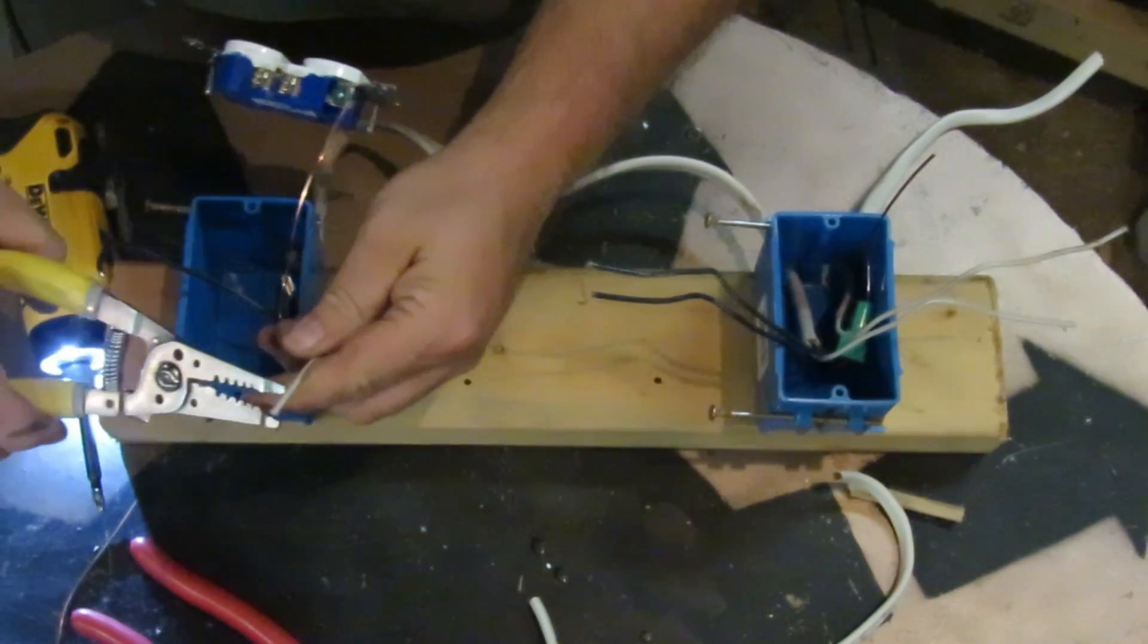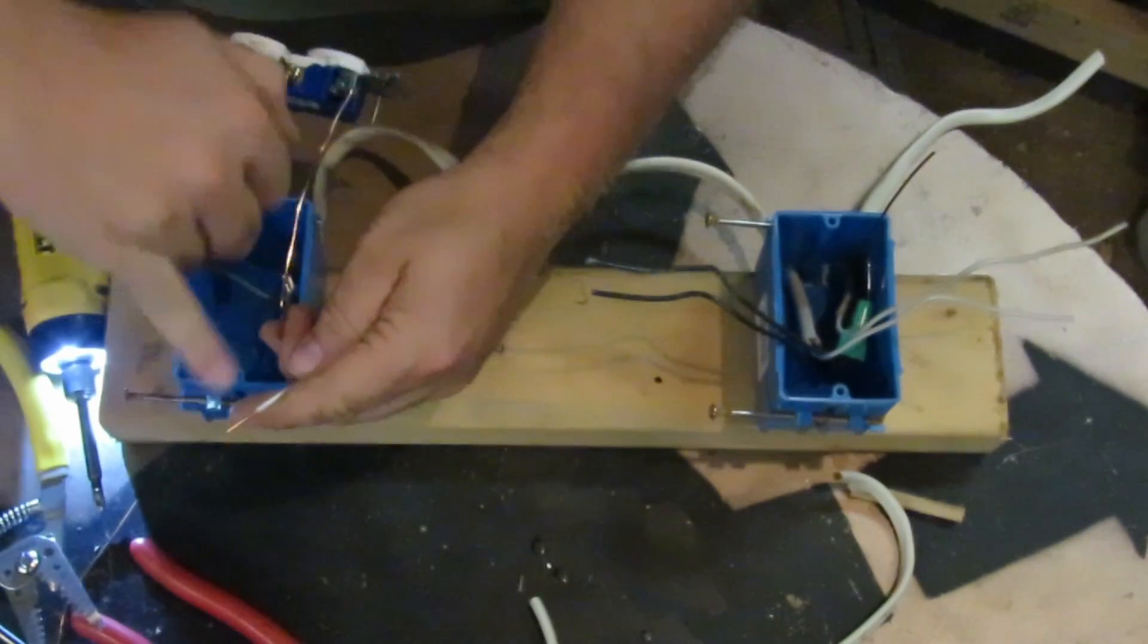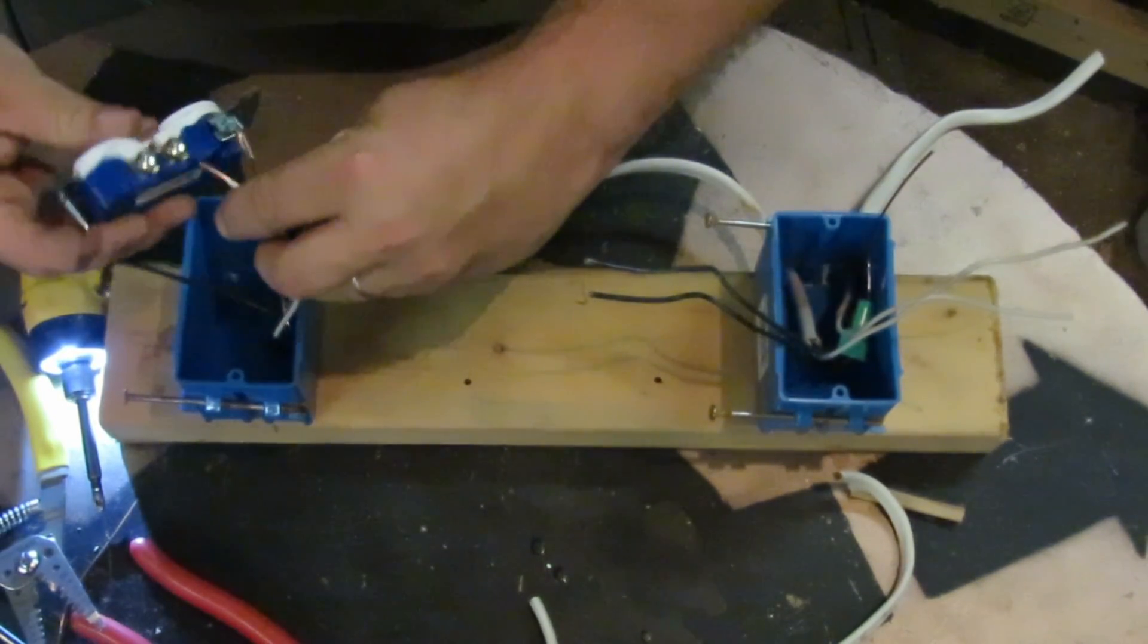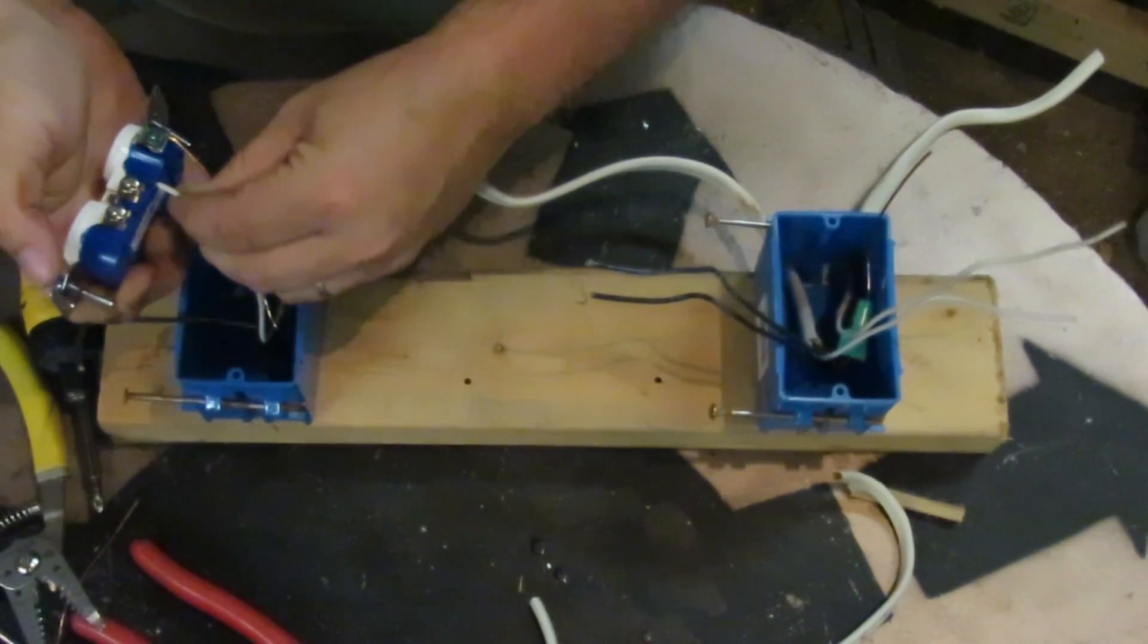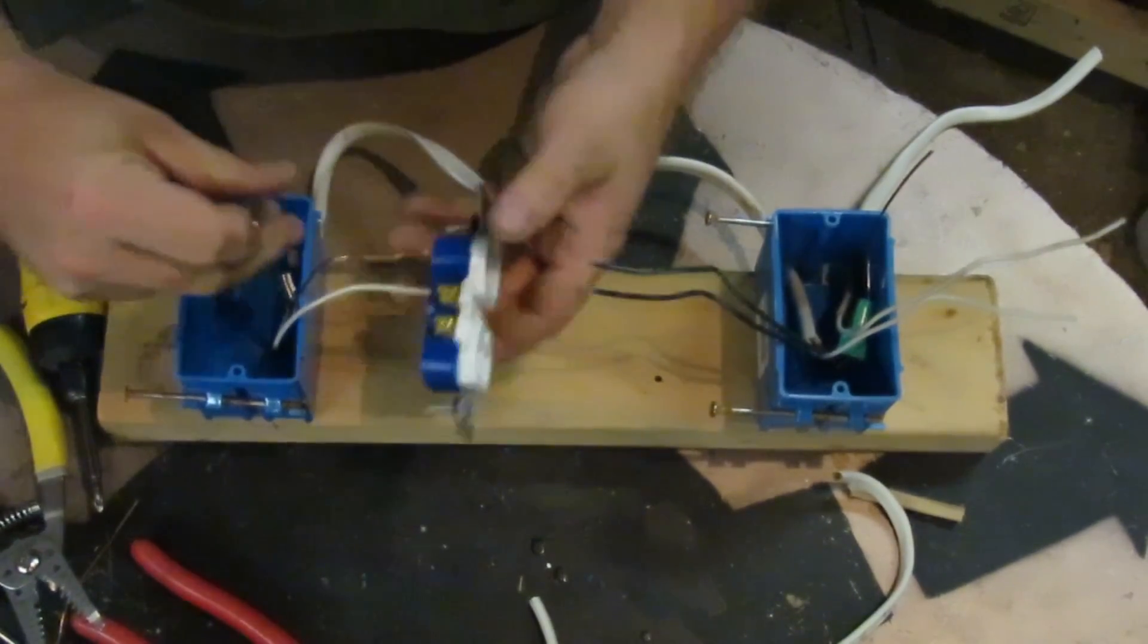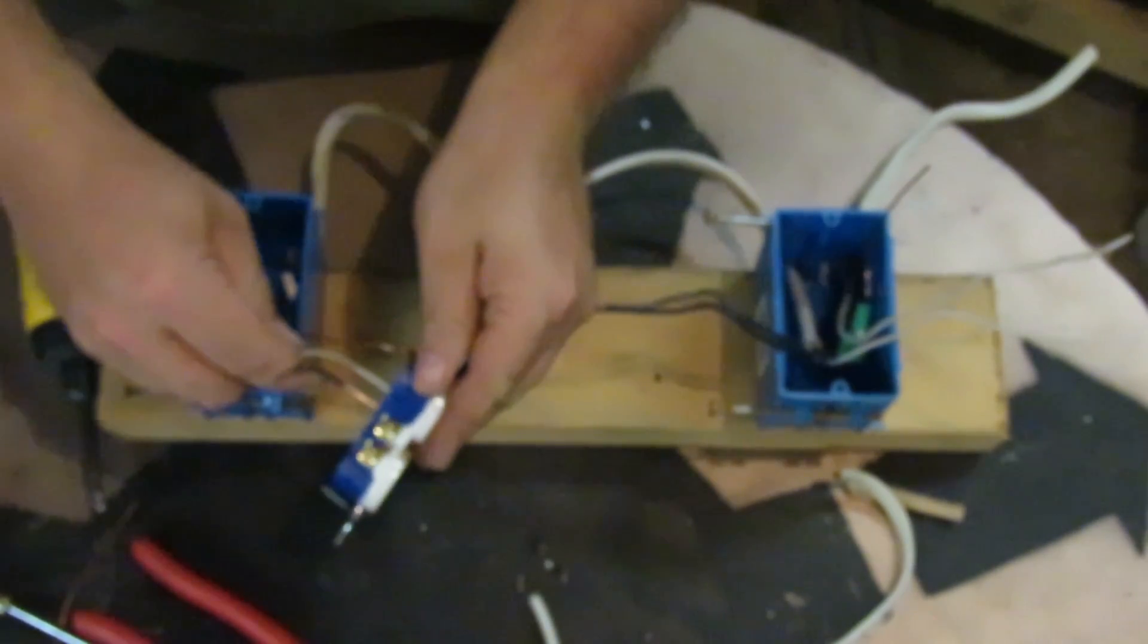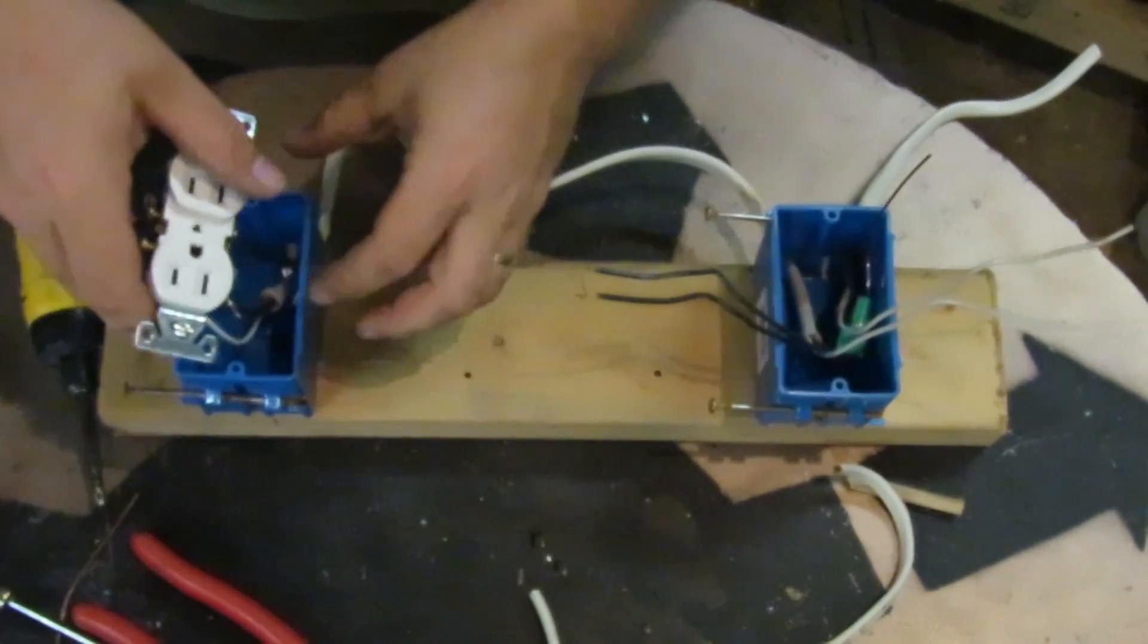And then you take one of your two conductors, in this case the white wire, and strip off about half an inch, about the width of your pinky finger, and then you can just stick it in the back of the receptacle. And it's not going to come out. And then do the same with the black wire, strip it off, and then push it right in. And that's all you have to do.